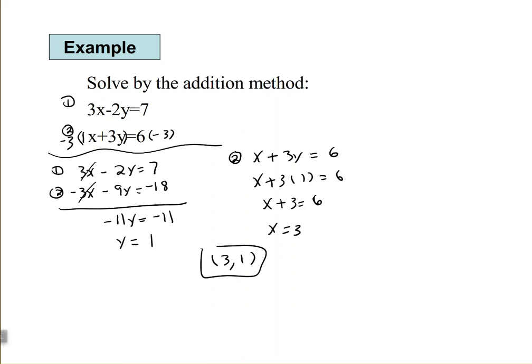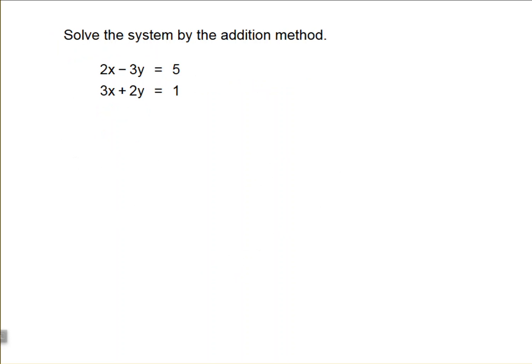Okay, let's take a look at another example. All right, here we have 2x minus 3y equals 5, and 3x plus 2y equals 1.